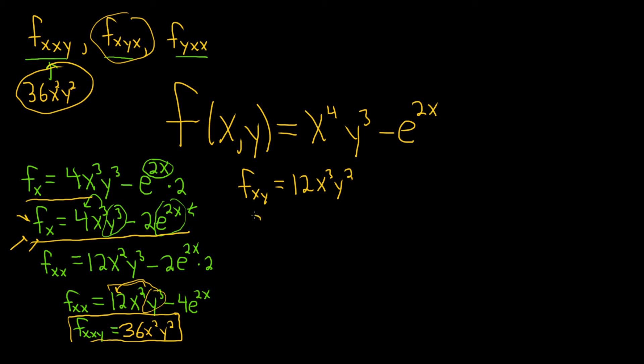Now we have to do with respect to x. So 3 times 12 is 36. So we get 36x squared. And again, the y squared is a constant. So same answer for both of these. Pretty cool. So I'll put that in a box.